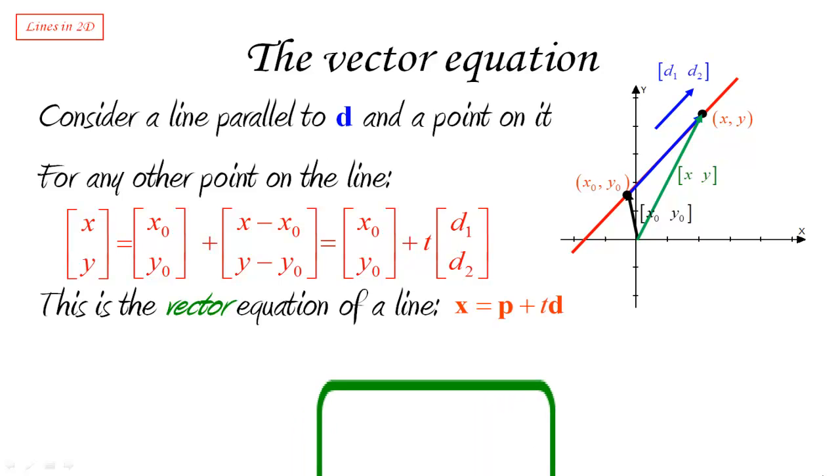We're going to write that the vector equation of a line is given by x, which again is a vector representing the point, is equal to p, which is again a vector representing a specific point, a given point, sort of what played the role of the intercept or the point in the point slope formula, plus some multiple of the direction vector.